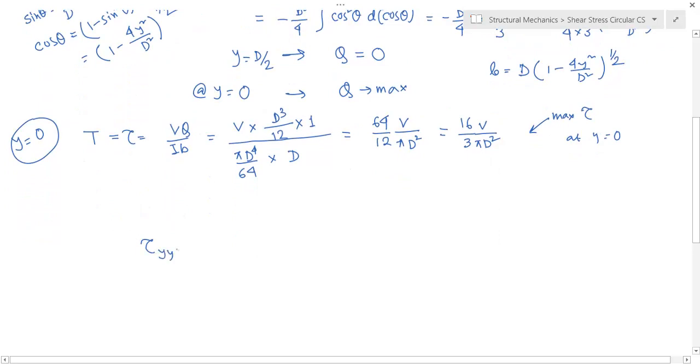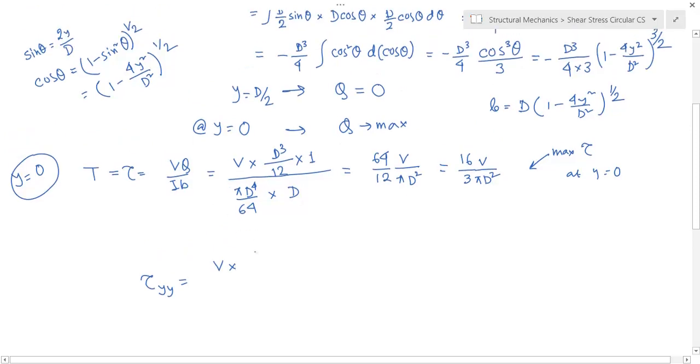So if you write down τ(y) equals V times Q divided by I times B, so you will get VD².